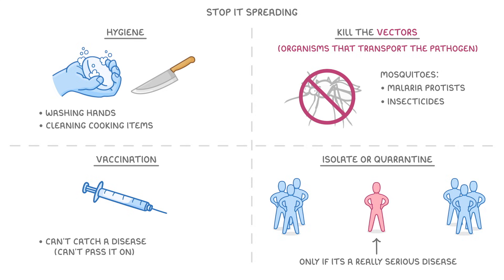So, just to quickly recap, pathogens can be spread in three ways: through the air, through contaminated food or water, or through direct contact. And to reduce this spread, we can do four things: we can be hygienic, we can kill the vectors, we can vaccinate people, or we can quarantine people.